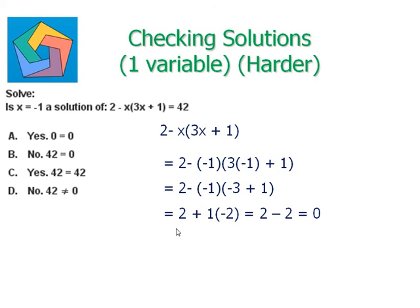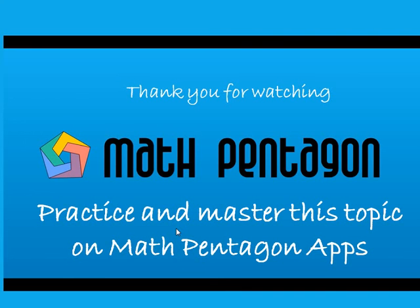But on the right-hand side of the equation we have 42, so the correct answer is: No, x equals negative 1 is not a solution of the given equation. Hope you enjoyed watching this video — you can practice and master this topic on our apps. Thank you so much, have a great day!